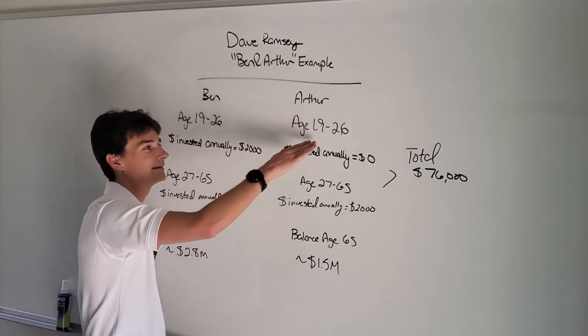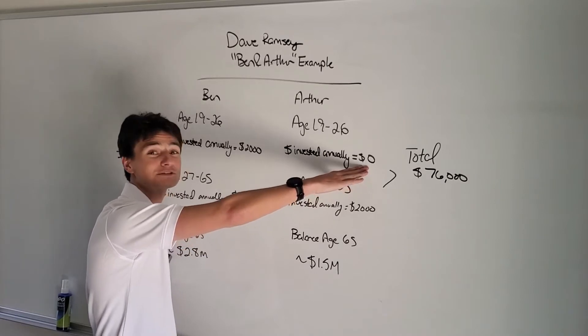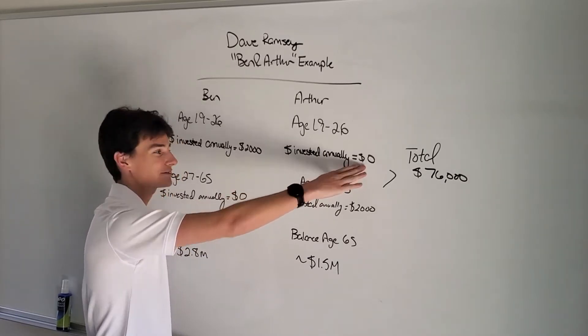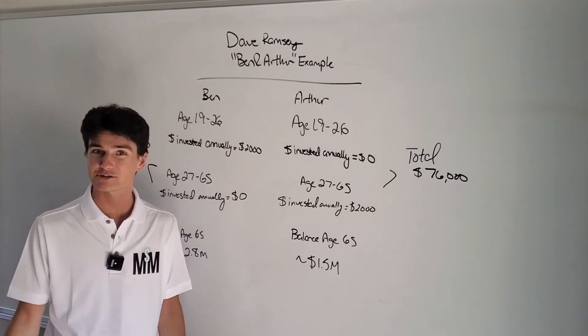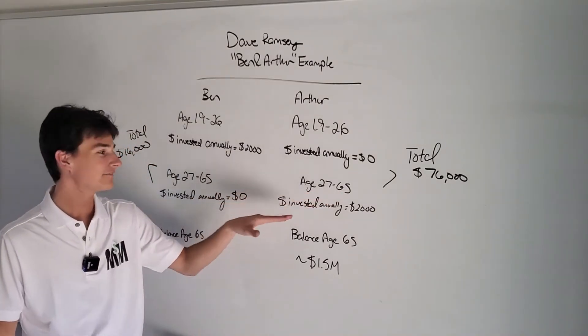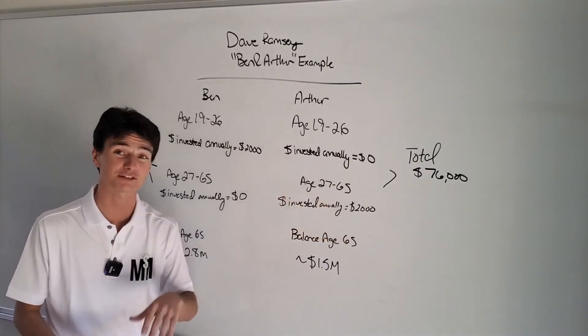Arthur, on the other hand, didn't invest during those years. He put in nothing for those entire years from age 19 to 26. At age 27, he's like, man, I'm getting older. I got to catch up. So from age 27 to 65, he starts saving $2,000 every year.